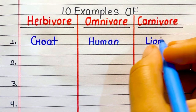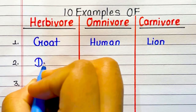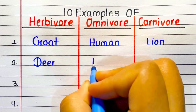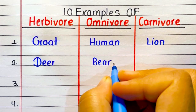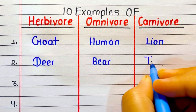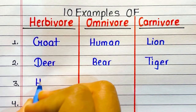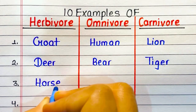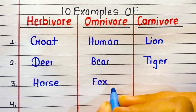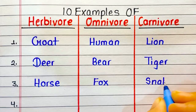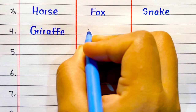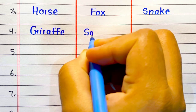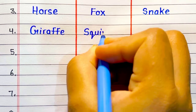Herbivore: goat, deer, horse. Omnivore: human, bear, fox. Carnivore: lion, tiger, snake.